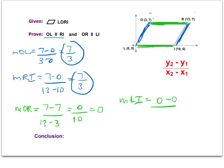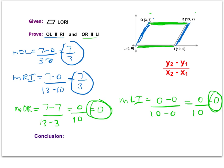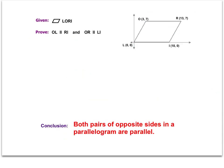Even though it looks like LI would also be a horizontal line with a slope of 0, we still have to show the work for the slope of LI as well. We do 0 minus 0 for the y values on top and the x values on the bottom, and again we get 0 over 10, which is 0. So we showed that these two segments also have the same slope, which proves that OR is parallel to LI. In the conclusion statement, we write: both pairs of opposite sides in a parallelogram are parallel.